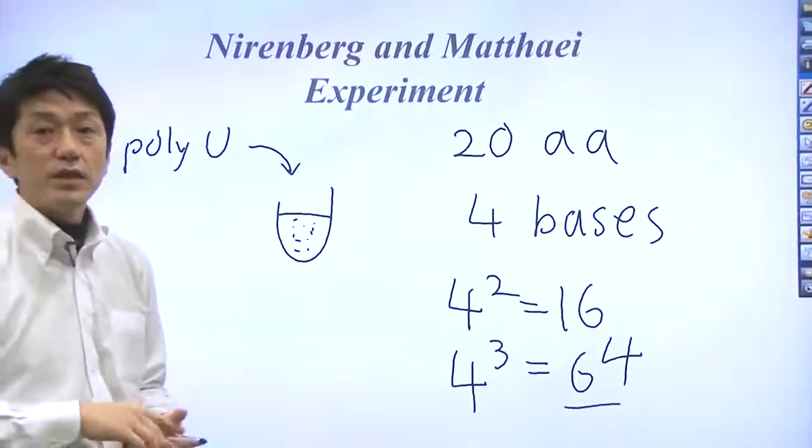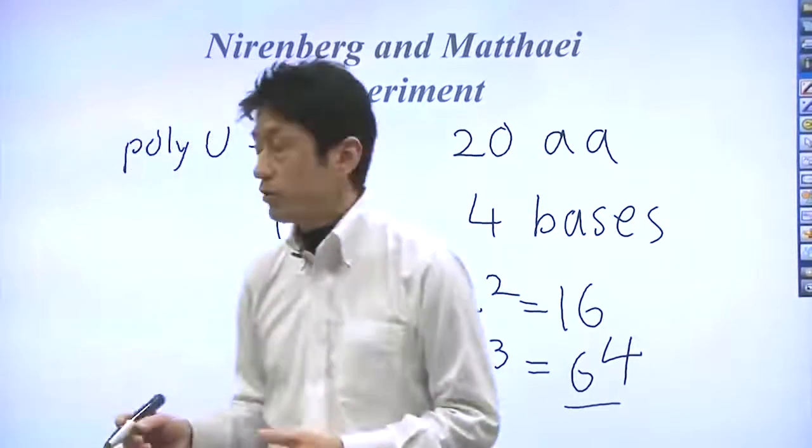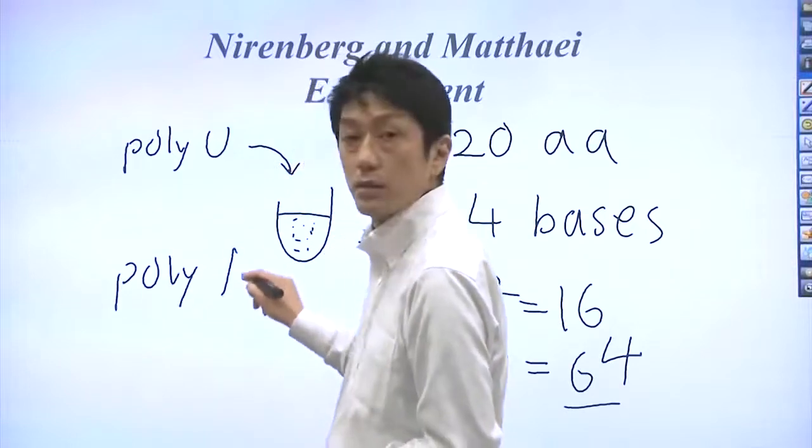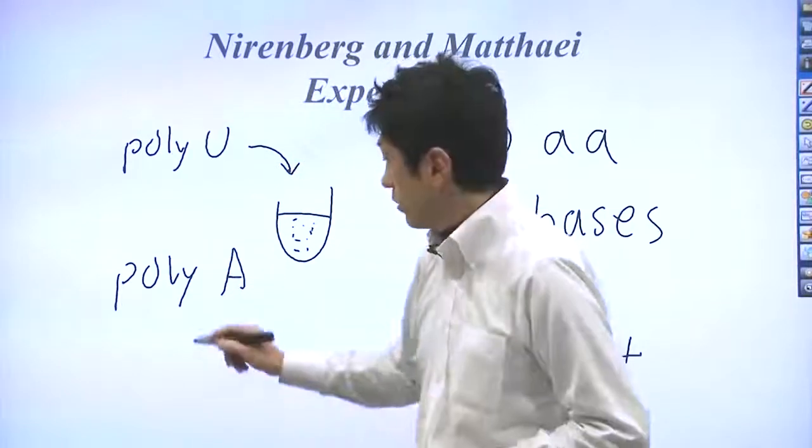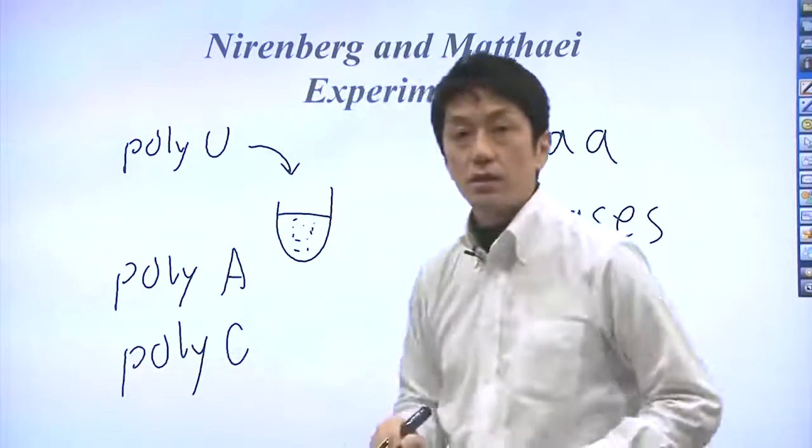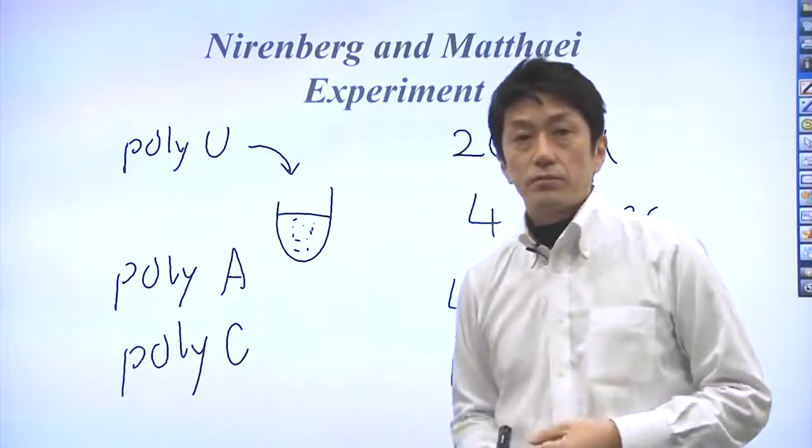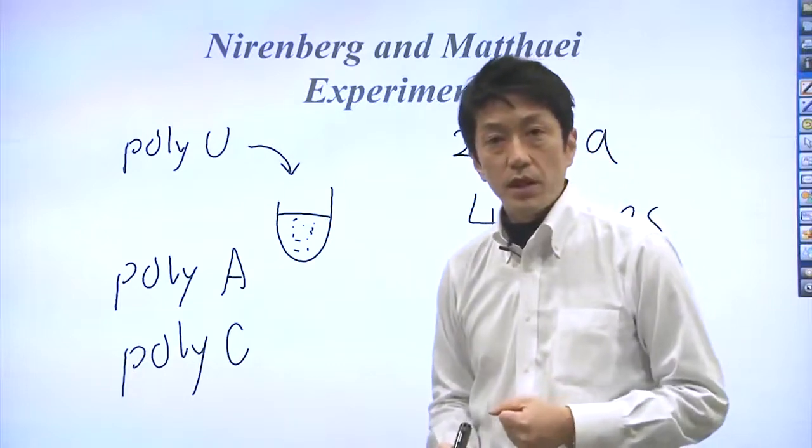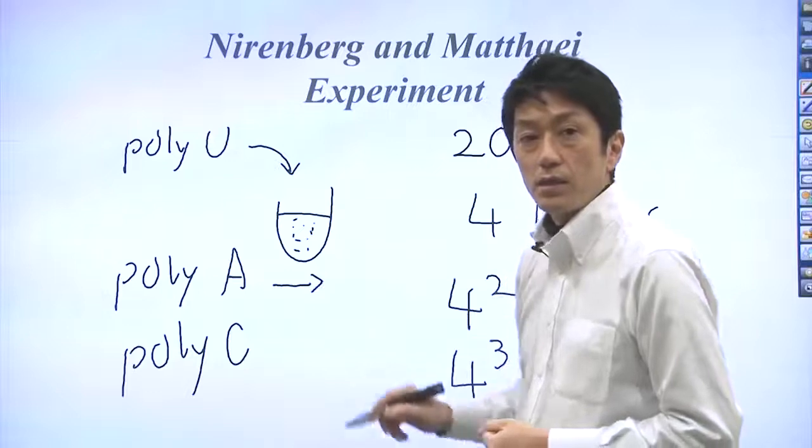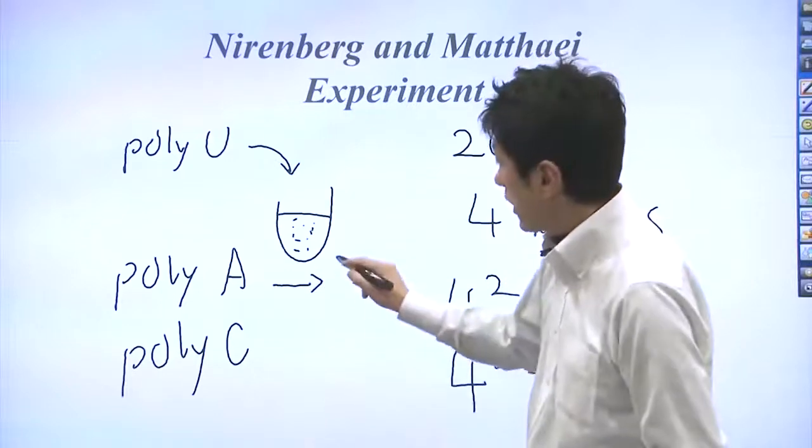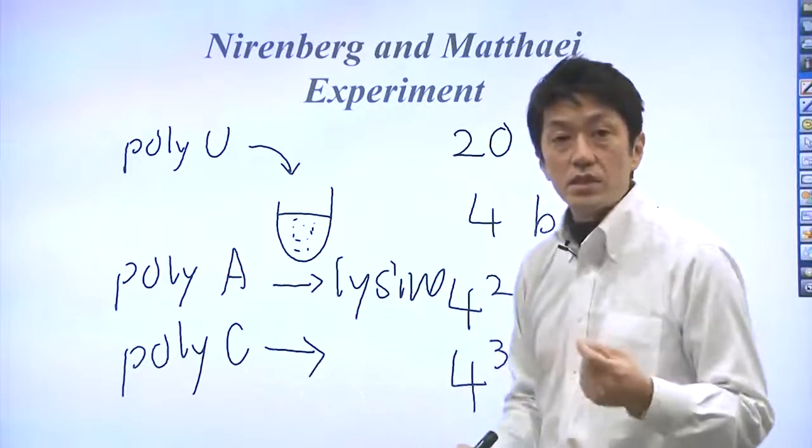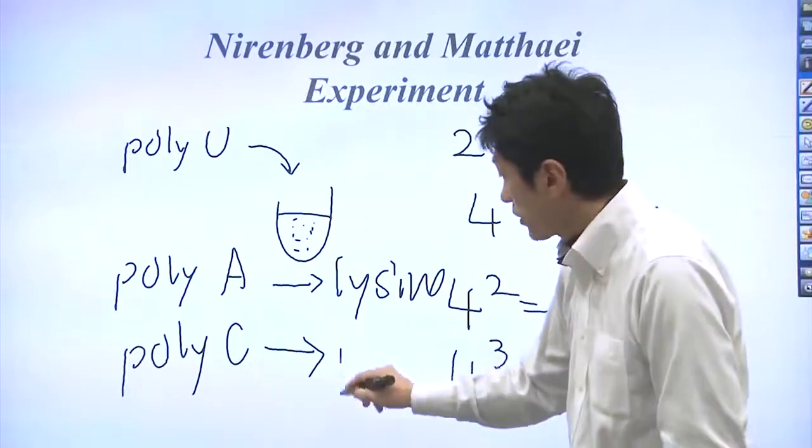By creating a set of polynucleotides composed of only A or only C, Dr. Nirenberg and Matthaei discovered that AAA is the code for lysine and CCC is the code for proline.